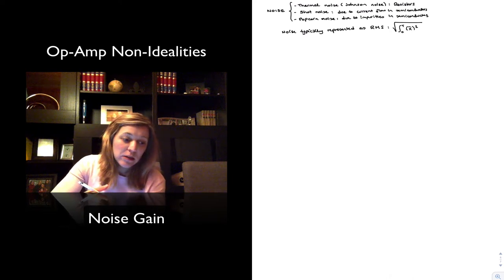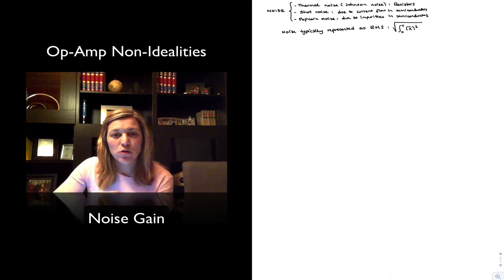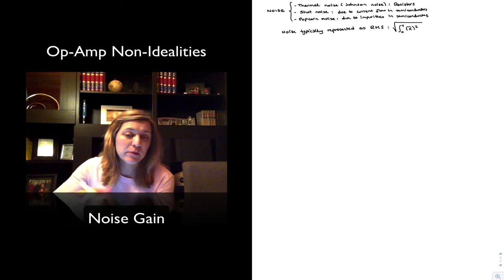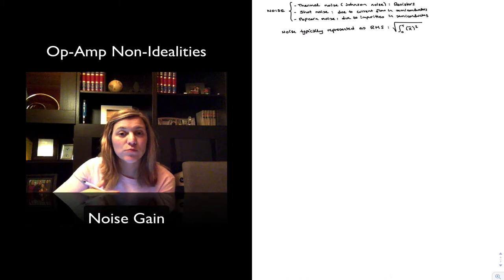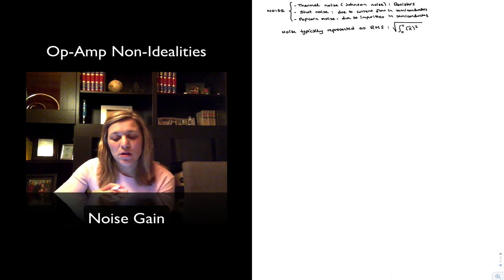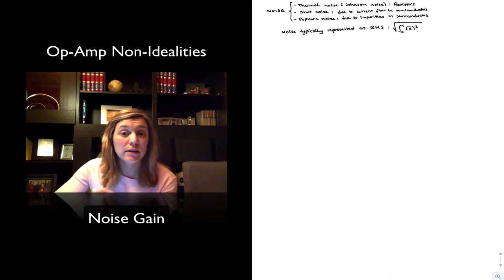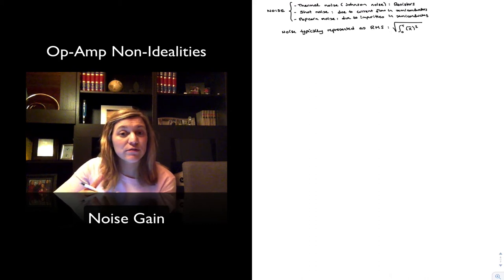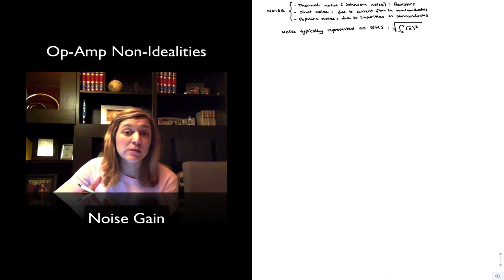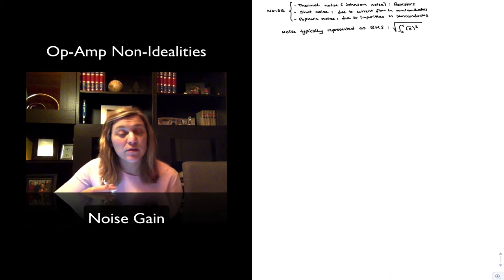An important concept we are going to talk about is noise gain. Once we identify the sources of noise in an amplifier — typically gathered from the datasheet in the form of offset voltage, input offset currents, etc. — the noise gain tells us how this noise gets amplified by the amplifier. It is an important parameter and figure of merit, specifically because noise gain determines both the stability and the bandwidth of the amplifier.